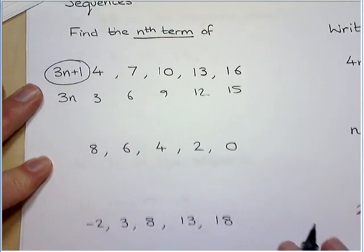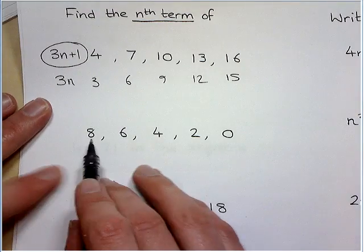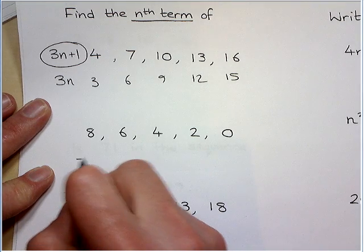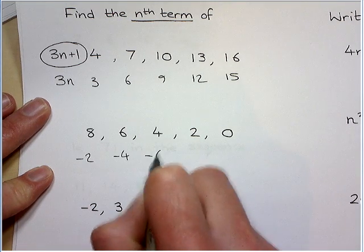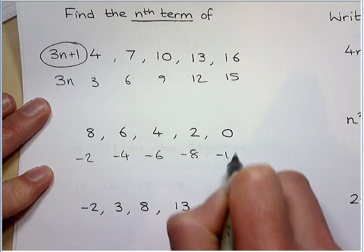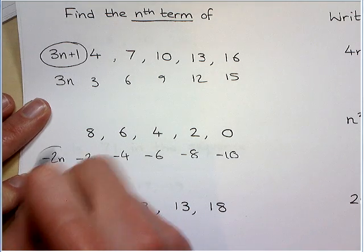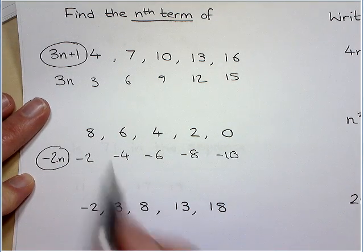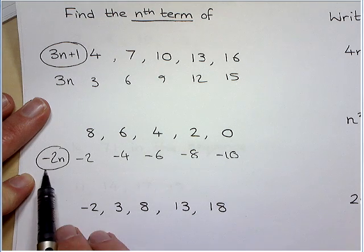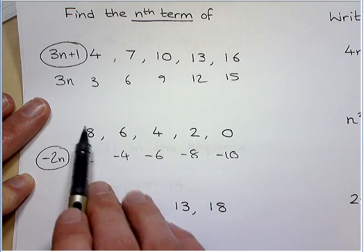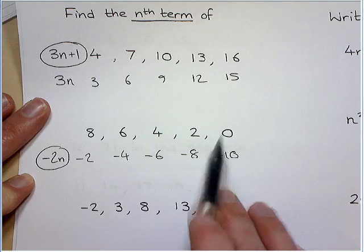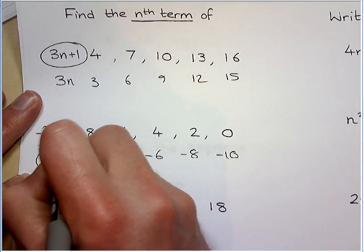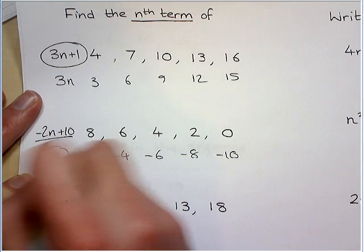So let's do the same here. This one's a bit trickier. You can see it's going down in 2's so this has got something to do with the minus 2 times table, and we call that minus 2n. But this isn't the minus 2 times table, it's just related to that. You can see it's 10 more, easier to see from this one. So this is minus 2 times table, but 10 more.